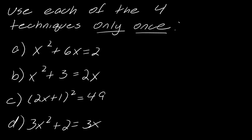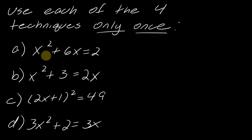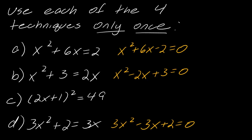If you're totally stuck, the first thing you want to do is rewrite the equations with everything pulled over to one side so that you can visualize them. I've brought everything over to one side for three of the equations, and I didn't do that with this one because this one is clearly set up for the square root property — so I'll just note that now.